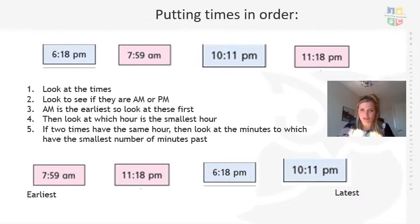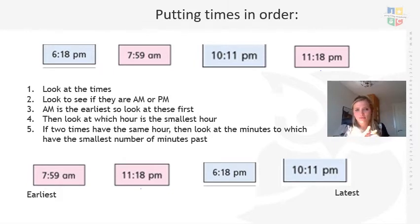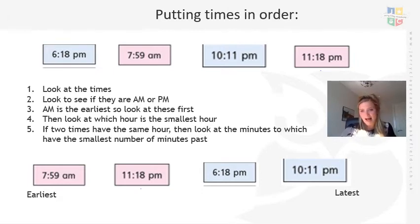When we put times into order, we understand the words earliest and latest. If it's earliest, it's towards the start of the day; if it's latest, it's towards the end. We're using digital clocks here — we've done work over the last couple of days on digital, so you should have a good idea of what the numbers represent. Just to recap: the number on the left is the hour and the number on the right is how many minutes have gone past that hour.